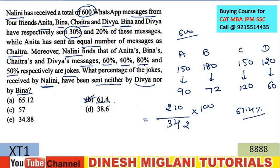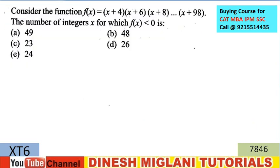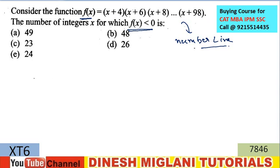Let's move to the next problem — a question on functions and a very important concept. This can only be solved easily if you have watched our session on the number line method in inequality. f(x) is given and f(x) < 0. To solve, put all factors equal to 0, giving values -4, -6, -8, ..., -98. Plot all these values on the number line.